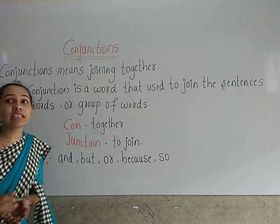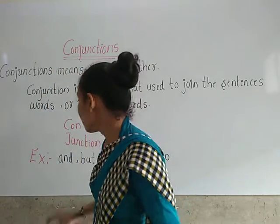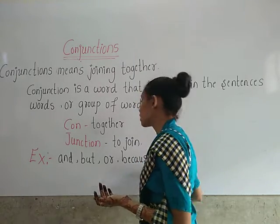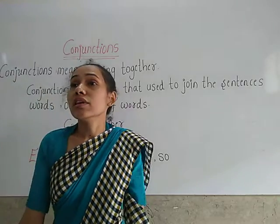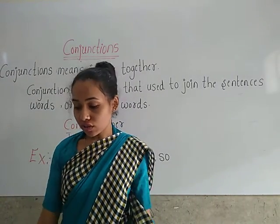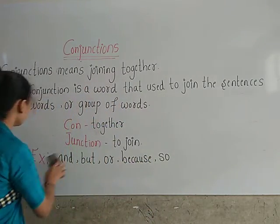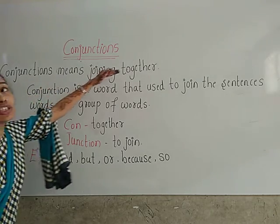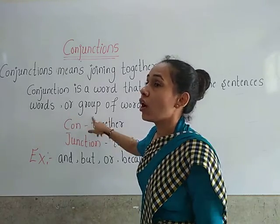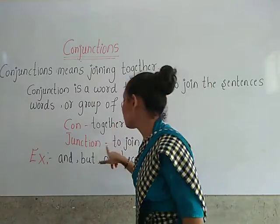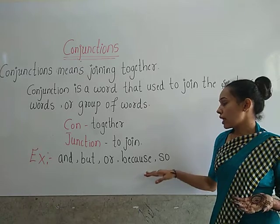We have learned conjunctions in the third standard grade: and, but, or, because, and so. In today's class we are going to revise these. And, but, or, because, and so are a few examples for conjunctions. Now let us see how we are going to join sentences or words through some examples.